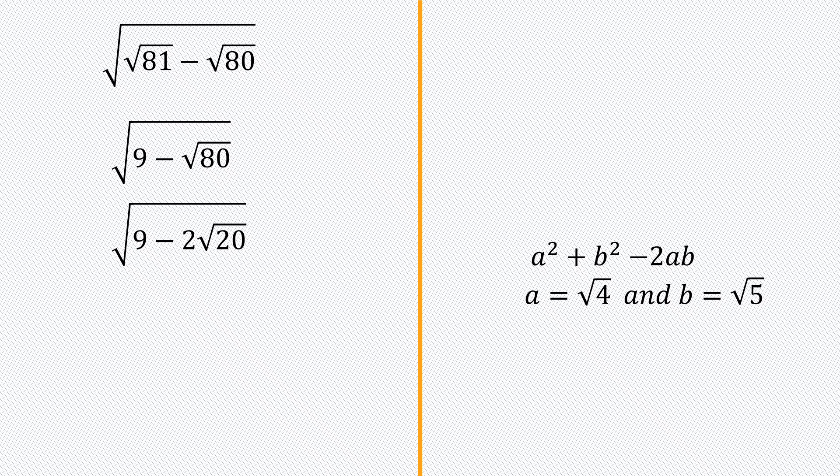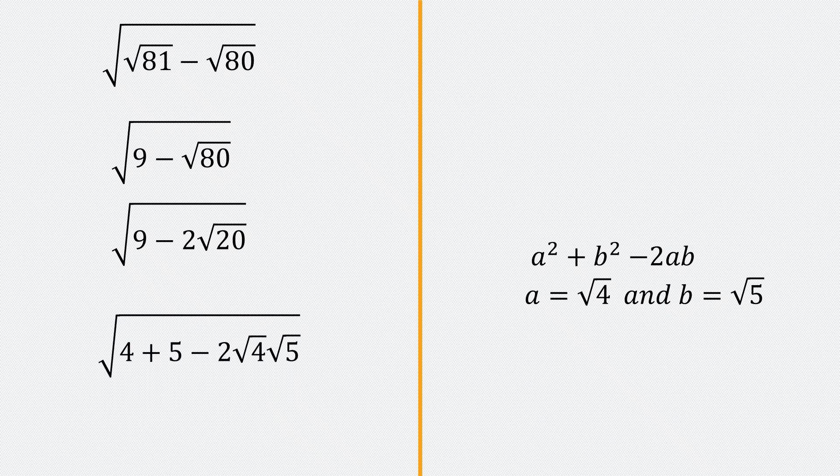So we can rewrite what's on the left-hand side using a equals root 4 and b equals root 5 in the form a squared plus b squared minus 2ab. So we have the square root of 4 plus 5 minus 2 root 4 root 5. Since 4 plus 5 is 9 and root 4 times root 5 is root 20, the expression remains the same — nothing has changed.